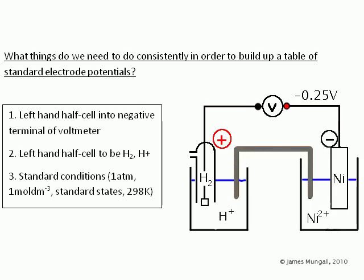And this next example shows the correct measurement of the standard electrode potential for nickel in contact with nickel two plus ions. And the negative sign of the voltage here indicates that the nickel half cell is pushing electrons onto the electrode more strongly than the hydrogen half cell.